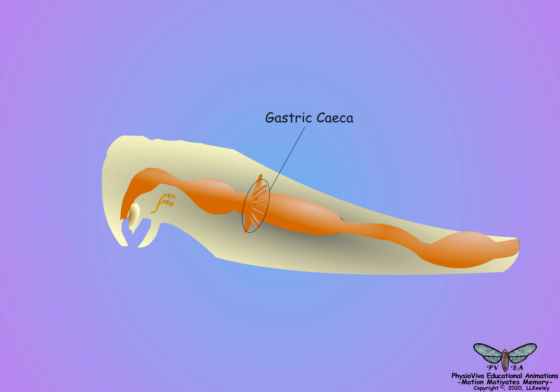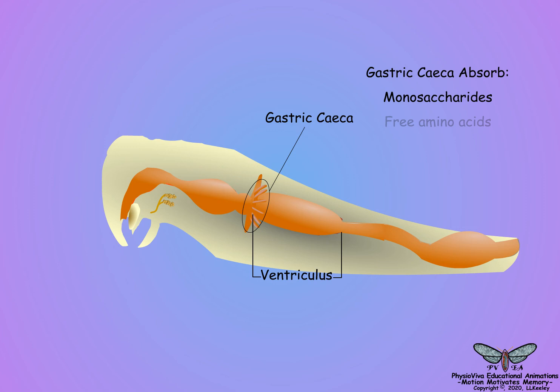Gastric caeca are diverticula located at the entry to the midgut, followed by the ventriculus. Gastric caeca expand the surface area of the midgut exposed to hemolymph for absorption of digested nutrients, and are shown to absorb monosaccharides such as glucose, fructose, and mannose, free amino acids, and lipid derivatives such as acylglycerides.